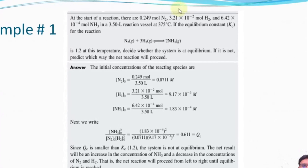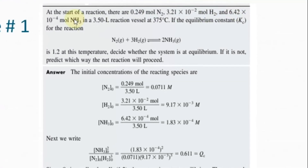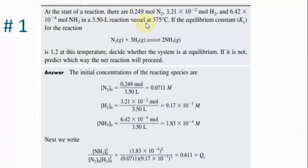Example 1: Given the amounts of nitrogen, hydrogen, and ammonia in a 3.5-litre reaction vessel at 375°C and an equilibrium constant of 1.2, decide whether the system is at equilibrium and determine its direction if it is not. The initial concentrations are: N₂ = 0.0711 M, H₂ = 9.17 × 10⁻³ M, and NH₃ = 1.83 × 10⁻⁴ M. Putting these values into the equilibrium expression gives a reaction quotient smaller than the equilibrium constant, so the reaction is not at equilibrium and will proceed from left to right.